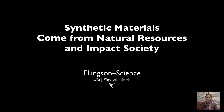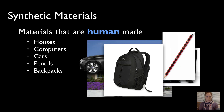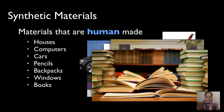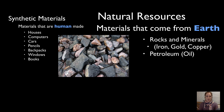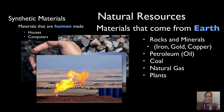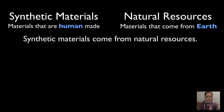In this video I'll talk about synthetic materials, which are human-made materials, where they come from, and how they impact society. Synthetic materials are materials that are human-made, like houses, computers, pencils, and backpacks. All of these things we make from natural resources — materials that come from the earth, like rocks, petroleum, natural gas, animals, and honey.